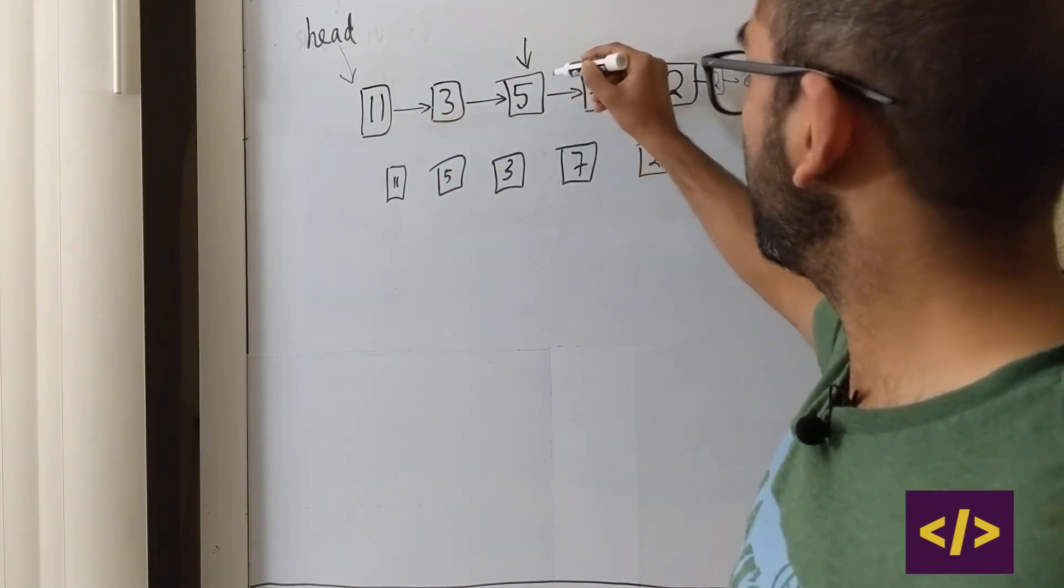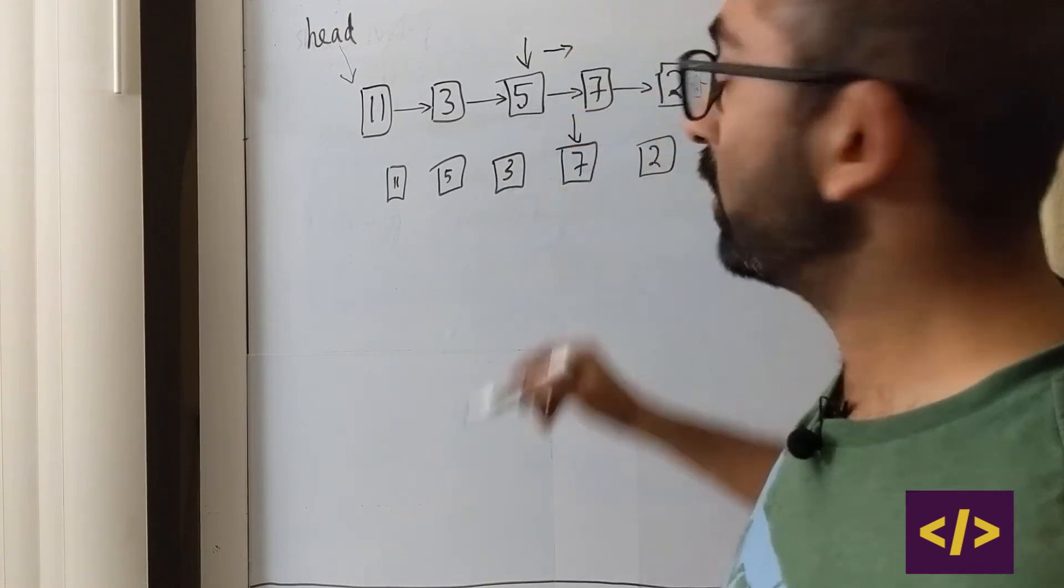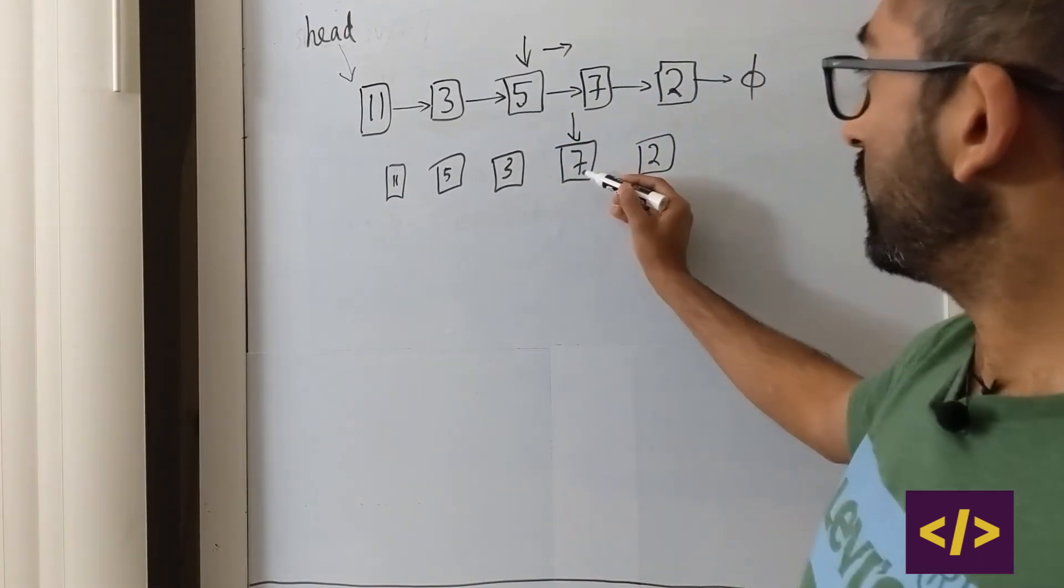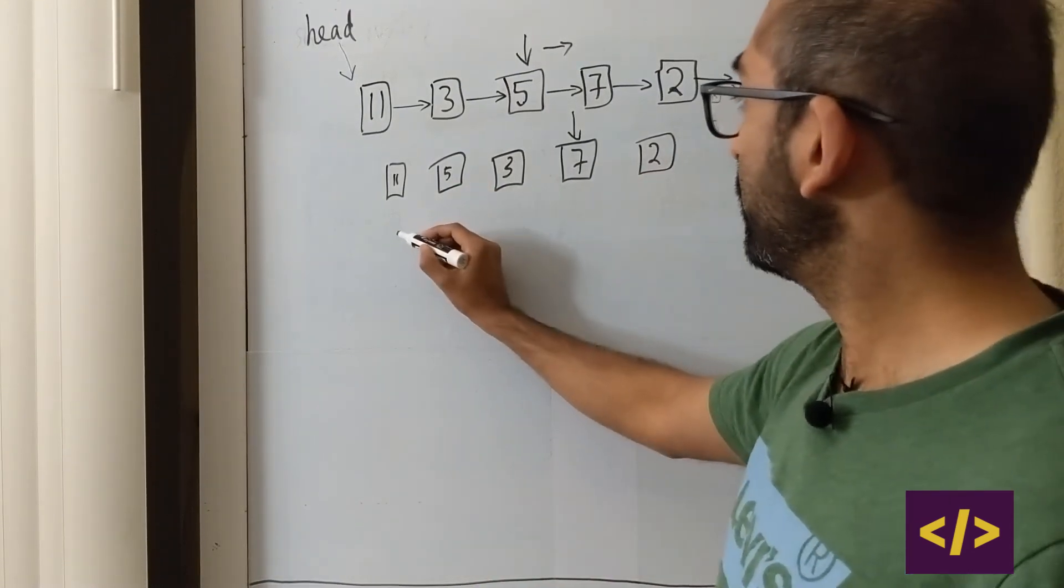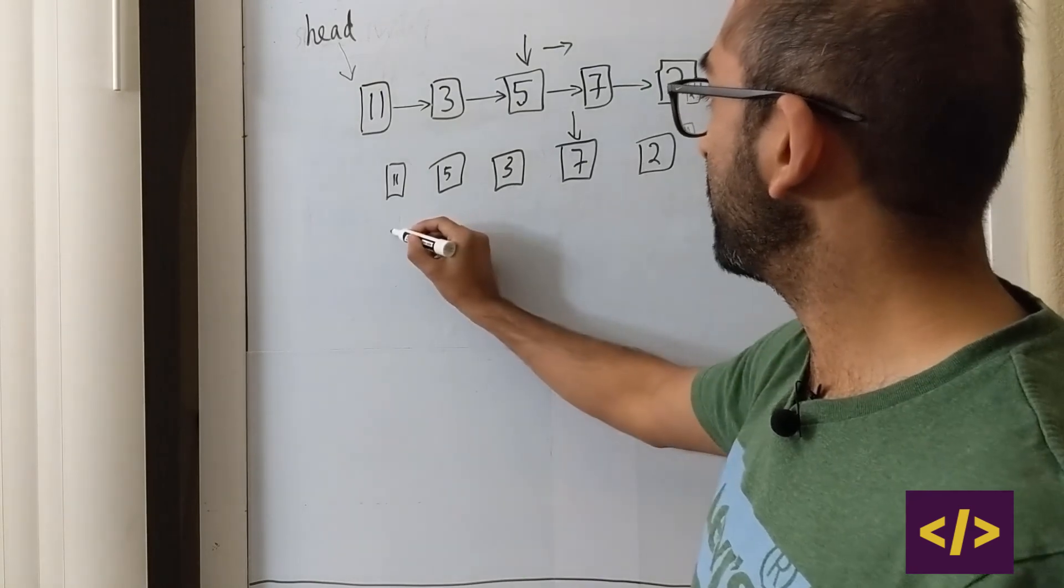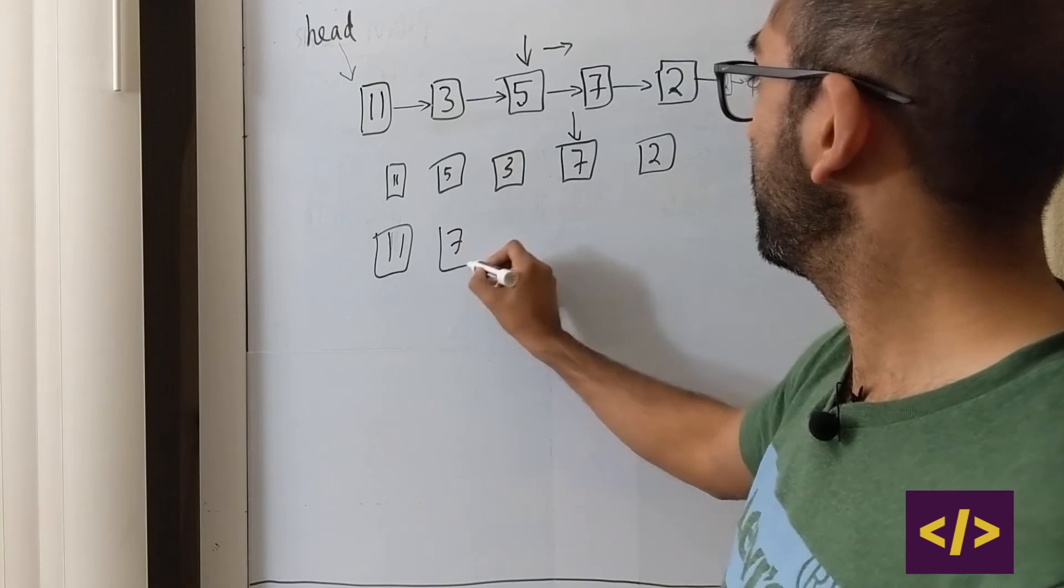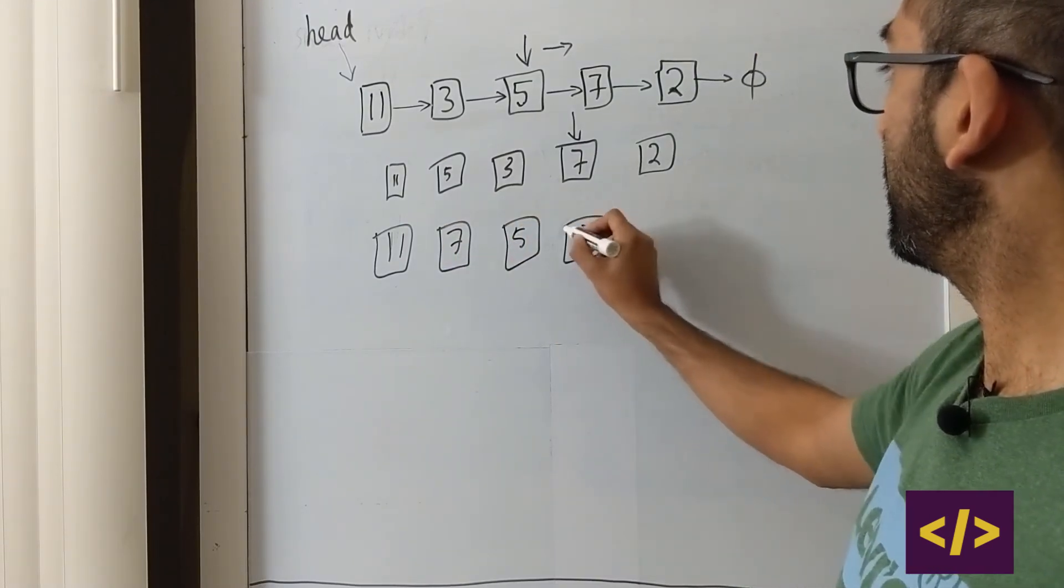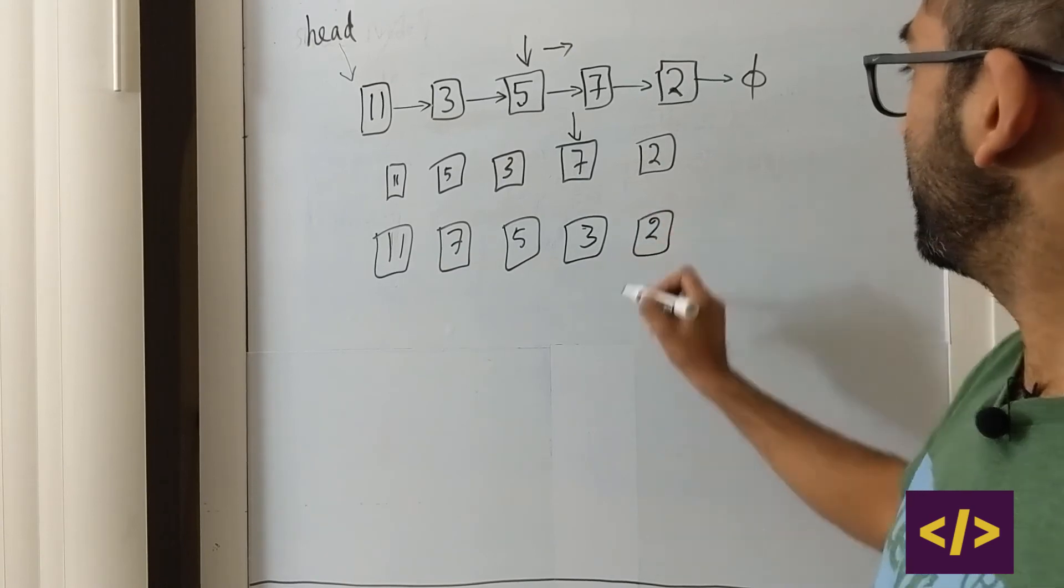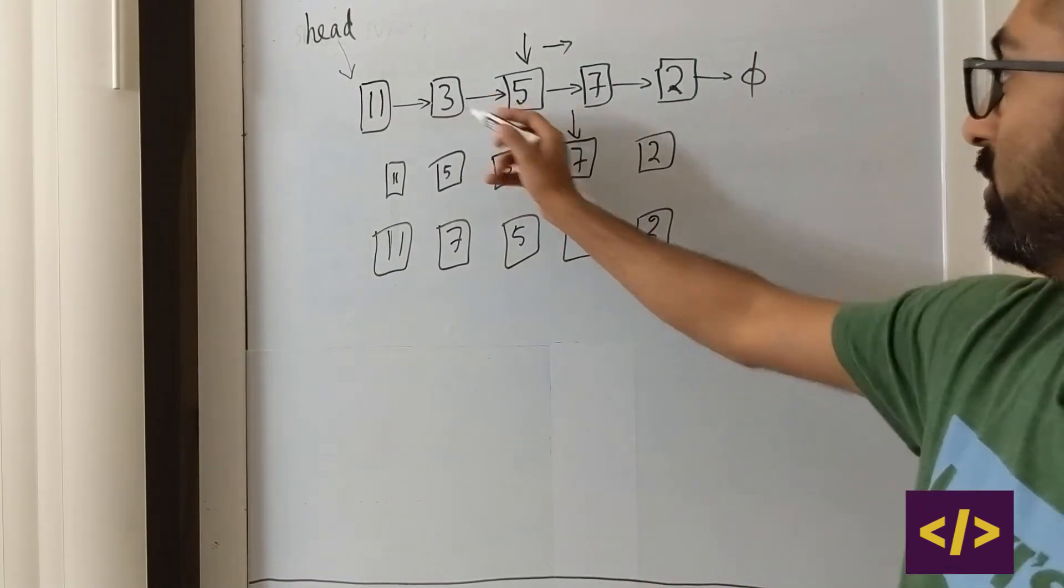And then the next time we do it, we are going to move it ahead by 1. And then we are going to take that guy and put it in between 1 and 5. So what happens next? We have basically 1, 7, 5, 3, and 2. This is exactly what we are looking for, right?